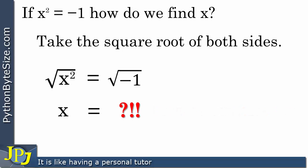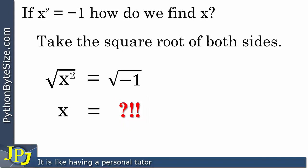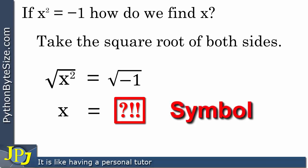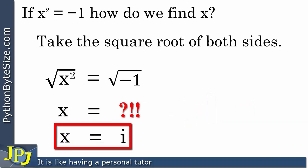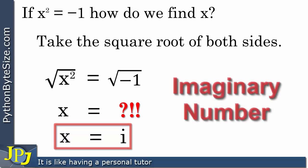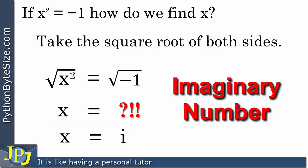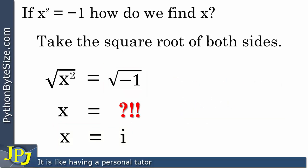I have illustrated the problem of not being able to find a real number to satisfy the equation with a question mark — really saying I don't know — and we looked at using the math module with Python and it couldn't find it either. But what mathematicians will do in circumstances like this is they will invent a symbol for this. The symbol they use is i, and you can see that appearing here: x is equal to i, where i is an imaginary number and i represents the square root of minus one. So in mathematics, every time you see the square root of minus one you could replace it with the symbol i.